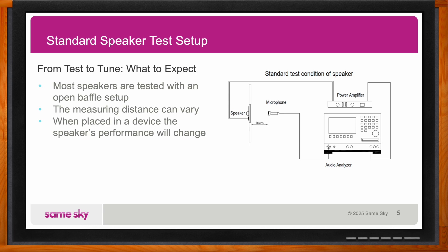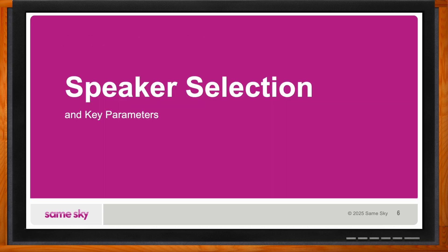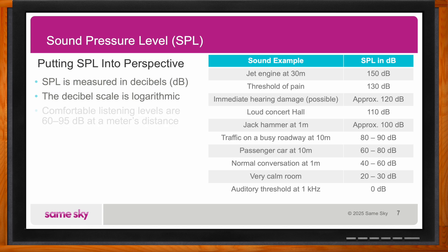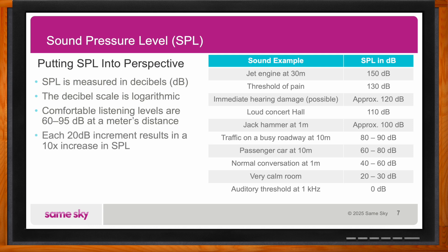The most important parameter is the sound pressure level. We measure sound pressure level in decibels. The logarithmic nature of the scale can sometimes be hard to conceptualize — comfortable listening levels are generally considered to be between 60 and 95 decibels at one meter. To put this in a real-world example, that's anywhere from the loudness of a loud talker or a busy city intersection.